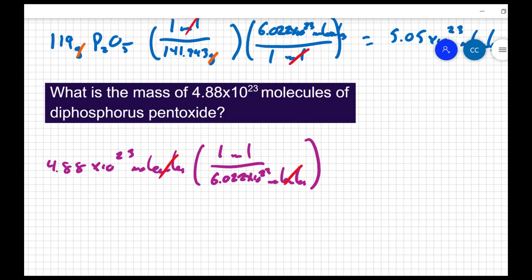And then when I'm looking for mass we're going to be looking for grams. So I'm going to say 141.943 grams for every one mole. The moles cancel out. And I'm left with 115 grams of material.